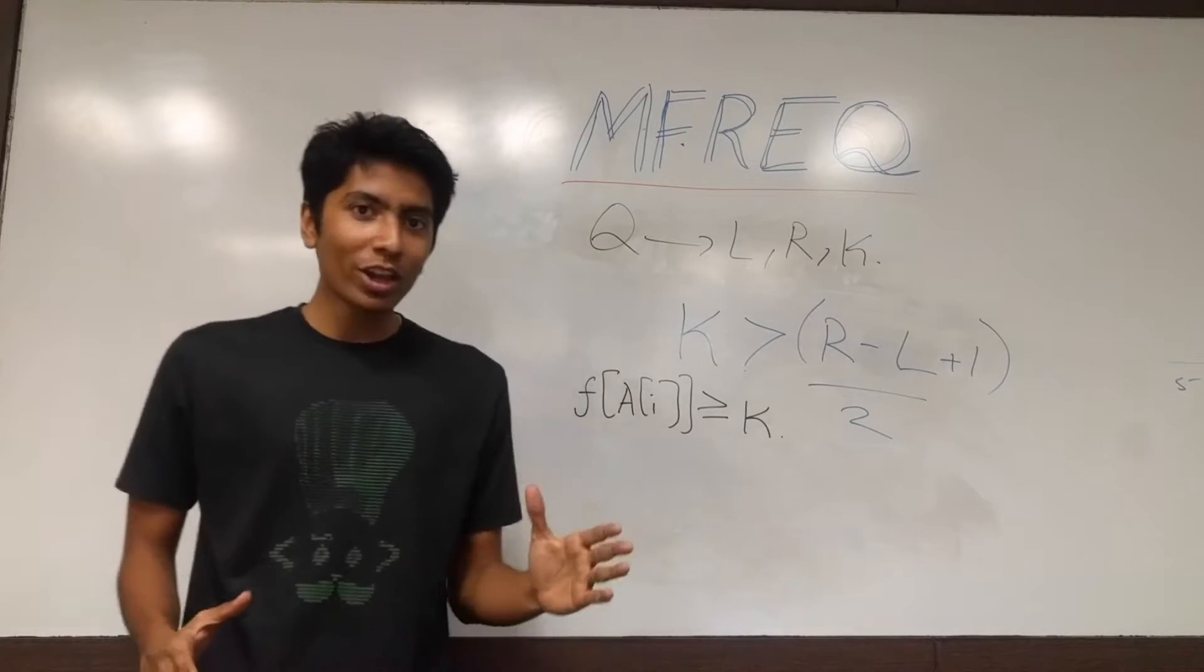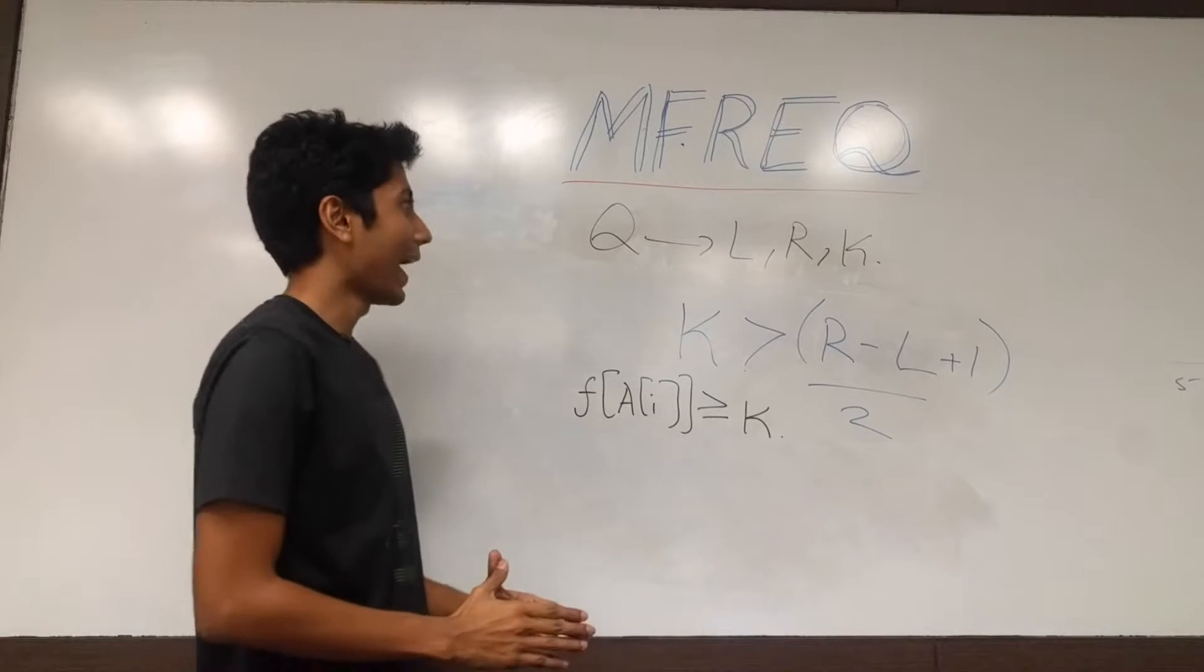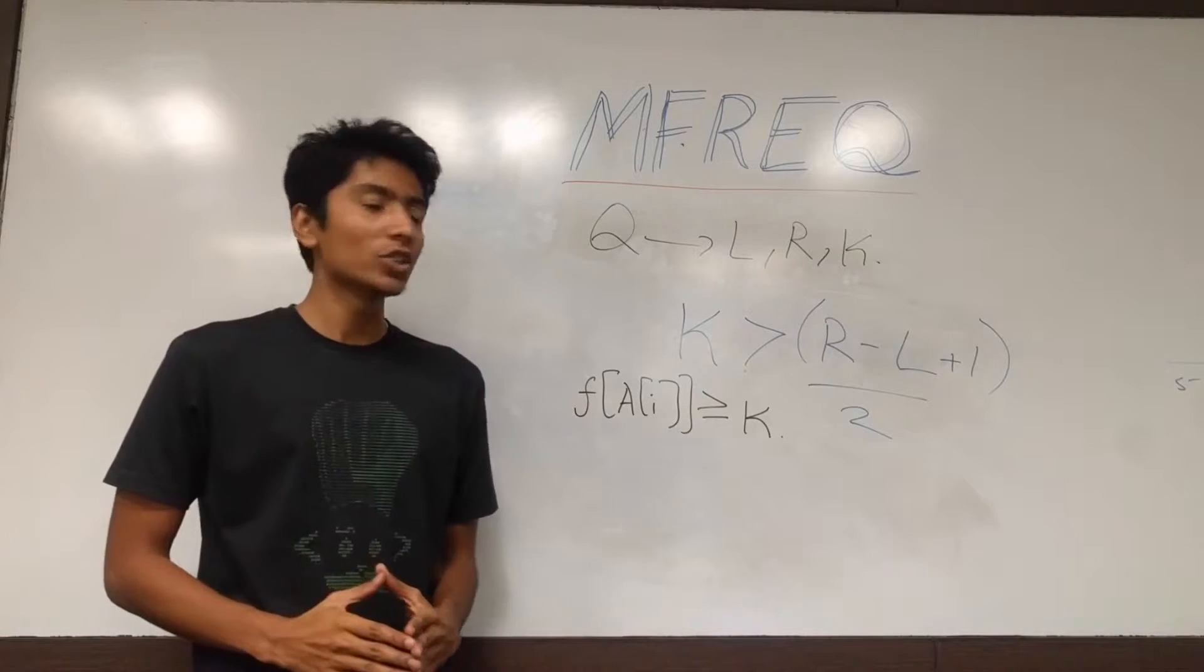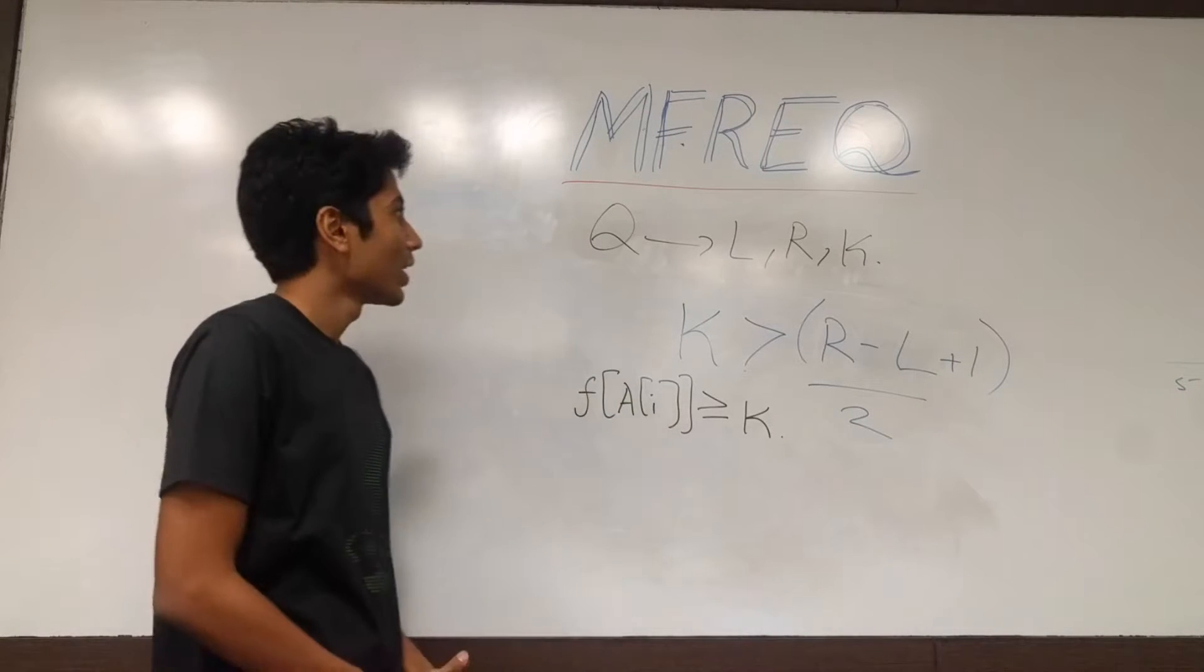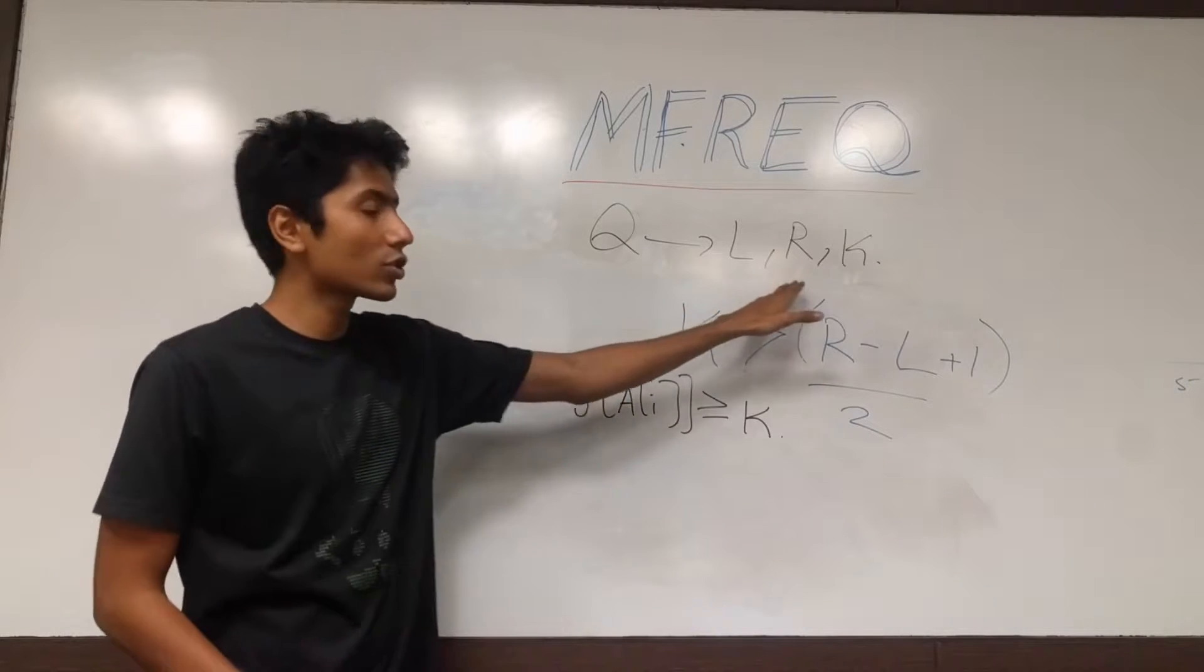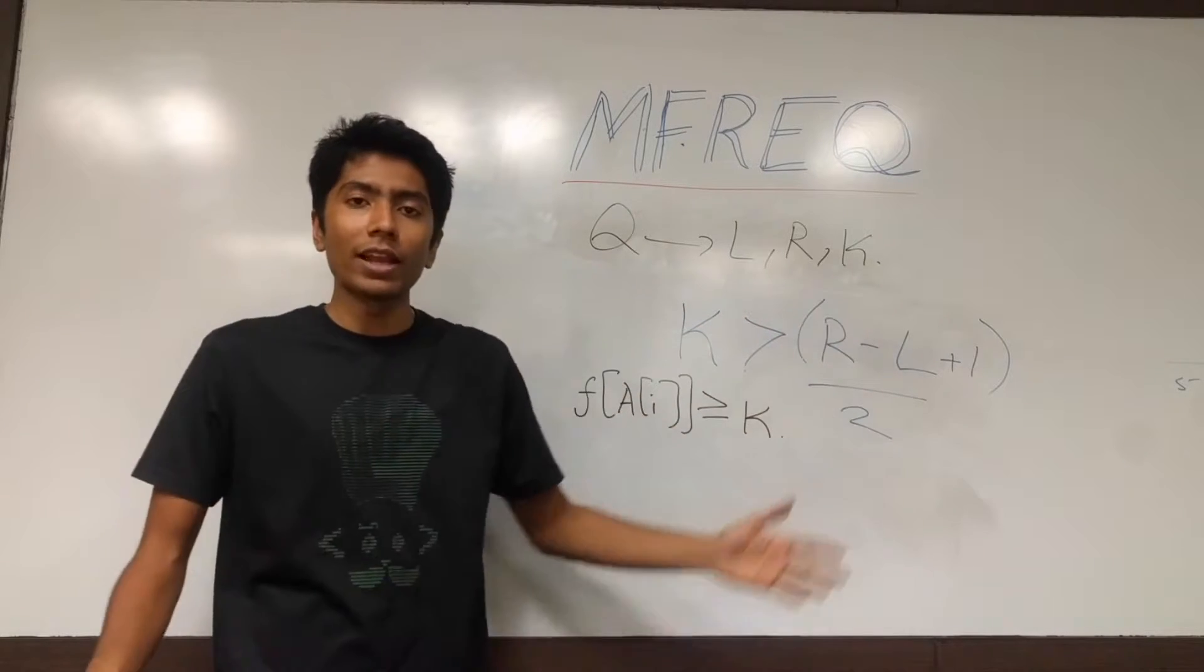Hello everyone, we are going to be talking about the most frequent number now and it's a problem from CodeShef LongChallenge. It talks about this big array that we have of size n and queries from left index to right index for a particular value k.